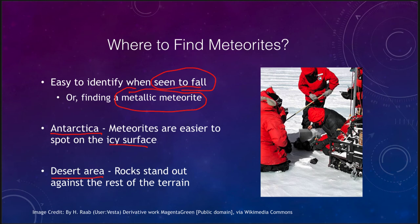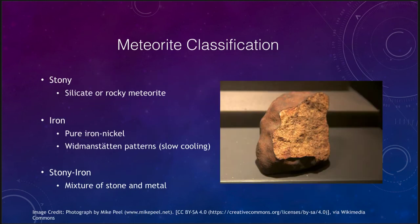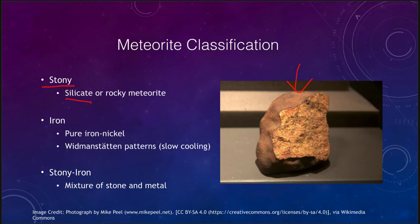We classify meteorites into three types. First, there are stony meteorites, also called silicate meteorites. These really don't look much different than an earth rock — they are simply chunks of rocky material that fall from space, with very little difference from ordinary rocks we see here on Earth.